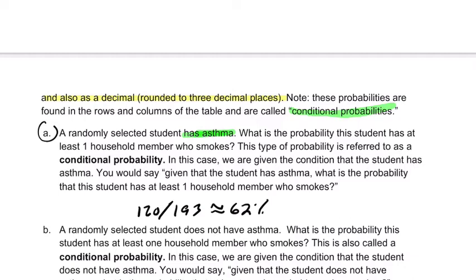Now, I'm just saying that this type of probability is referred to as a conditional probability, where you could name the condition that the student has asthma. This is just to recognize that often when you're dealing with formal conditional probability, you say stuff like this. Given that the student has asthma, what is the probability that the student has at least one household member who smokes? I'm showing you in two perspectives what they all mean.